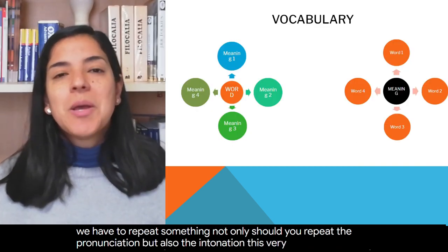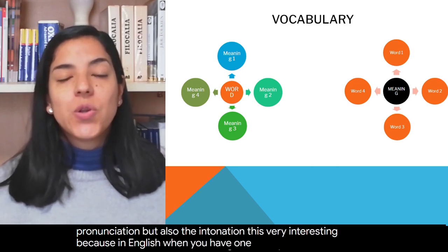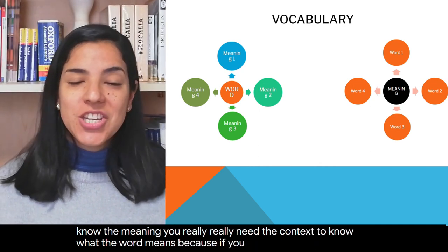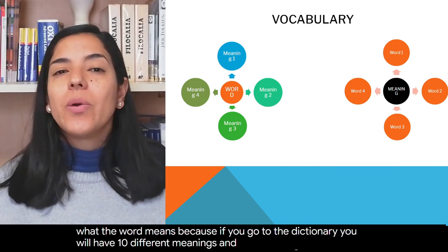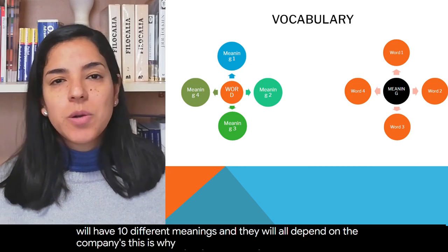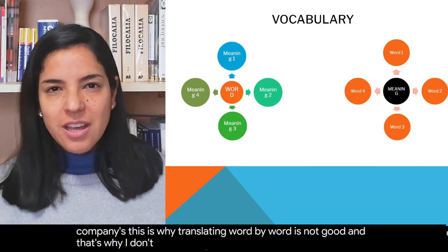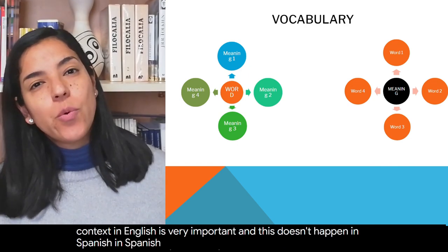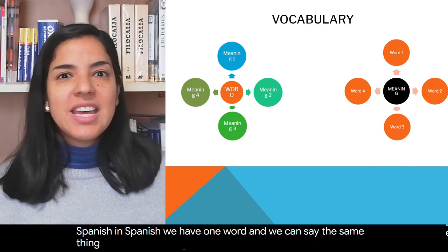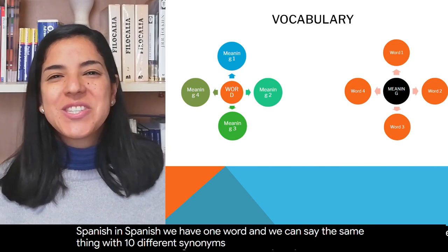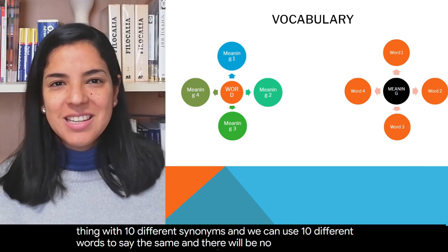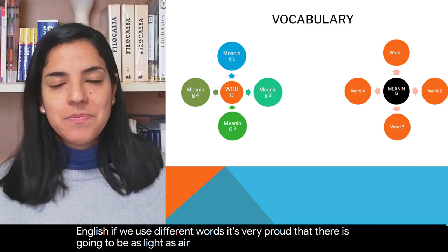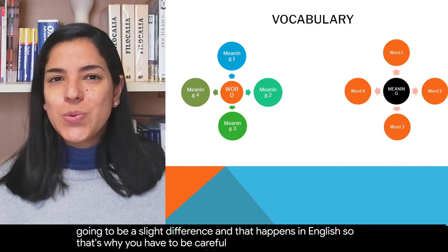This difference is very interesting: in English, when you have one word and you don't know the meaning, you really need the context to know what the word means. Because if you go to the dictionary, you will have 10 different meanings and they will all depend on the context. This is why translating word by word is not good, and that's why I don't like translating at all — I like associating. In Spanish, we can say the same thing with 10 different synonyms and there will be no difference. But in English, if we use different words, it's very probable that there is going to be a slight difference. So that's why you have to be careful when choosing words in English.